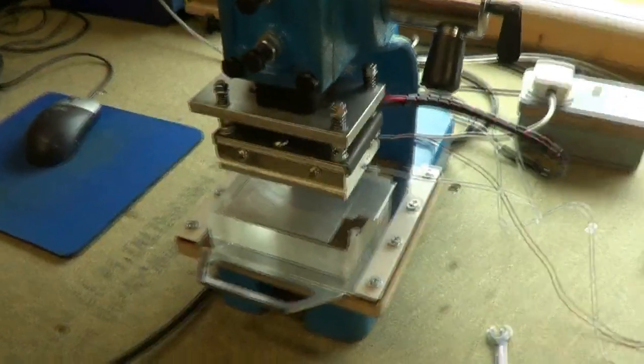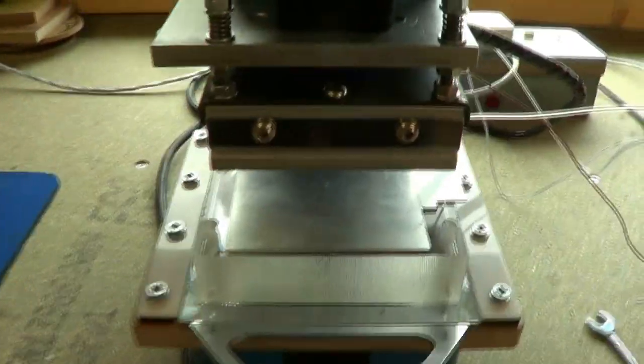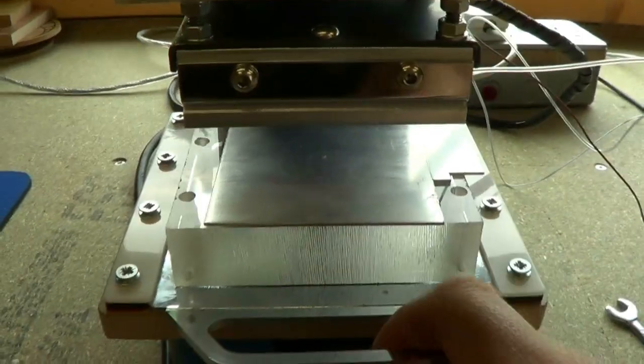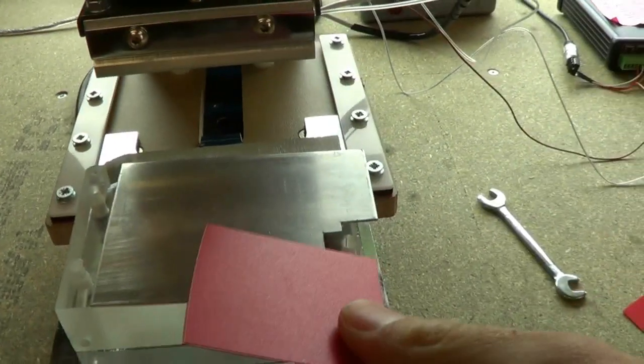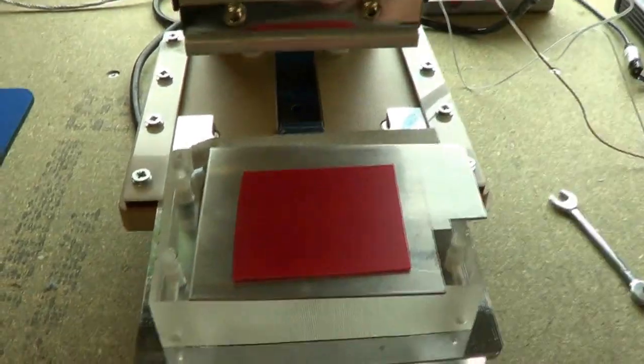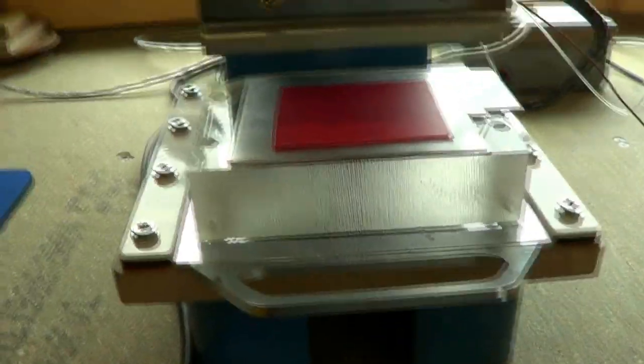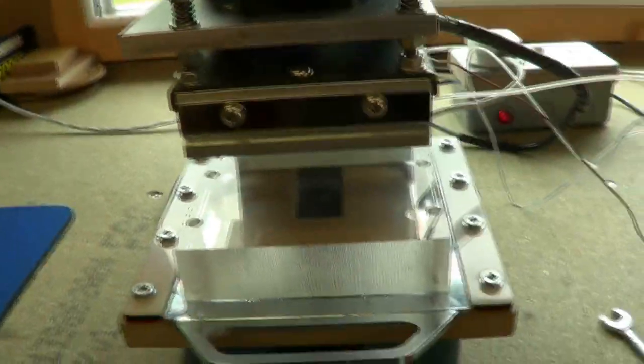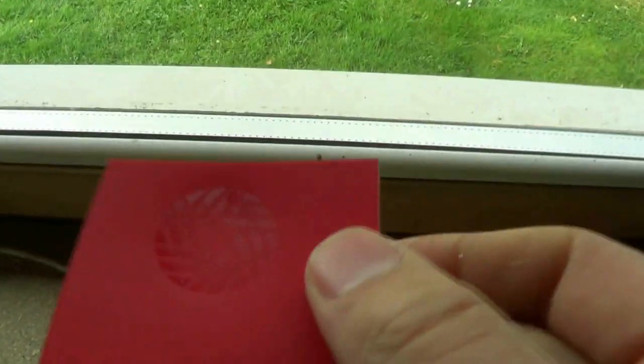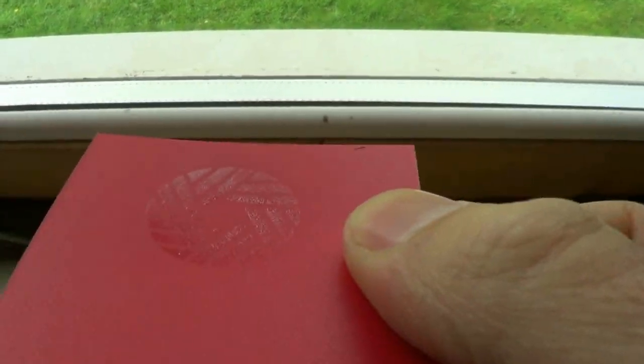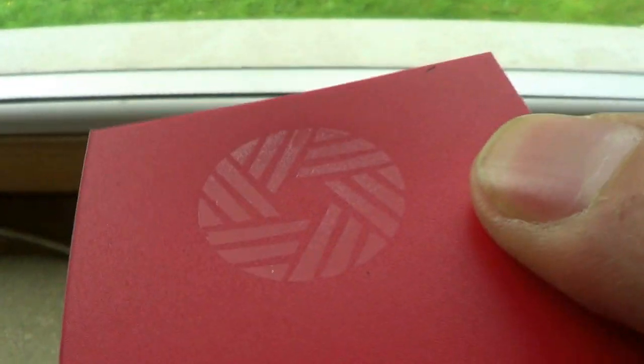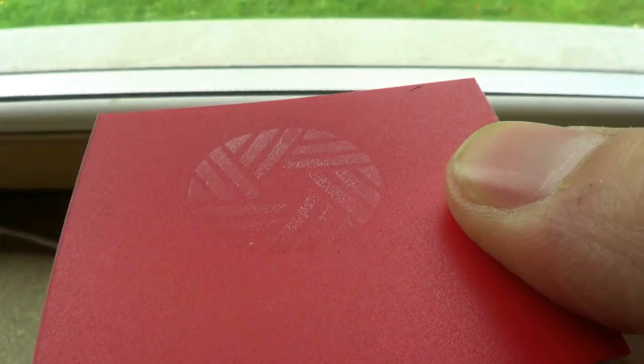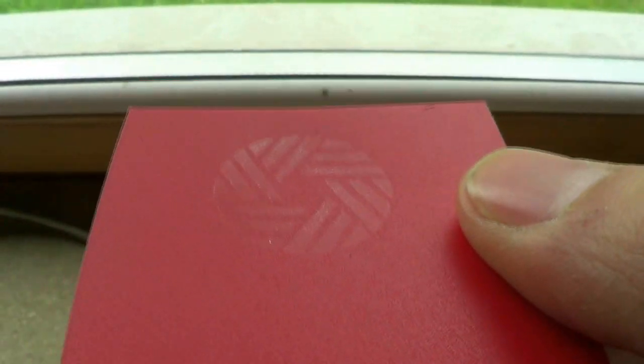So to check if the die is actually level with the substrate, I found the best way is to just take a piece of blank material, give it a quick press, make sure it doesn't stick to it, and if you can see a slightly melted impression over the whole surface, as you do there, then that means the die is perfectly flat on the substrate. If it isn't, then you can adjust the screws here to bring it into flatness.